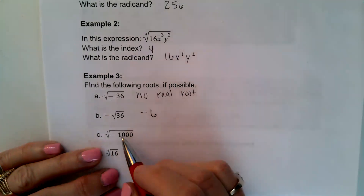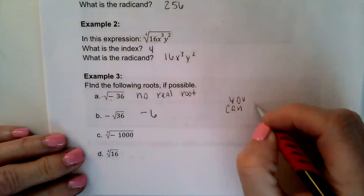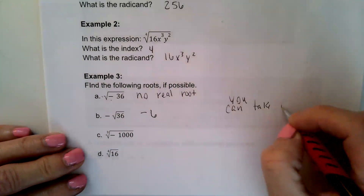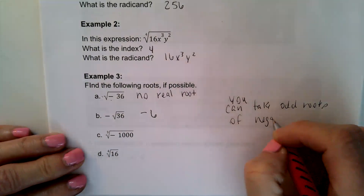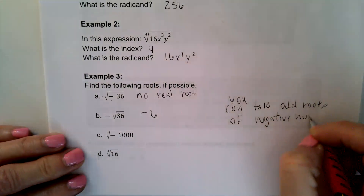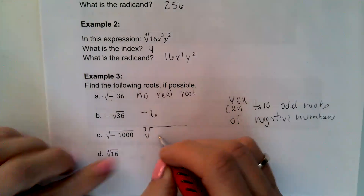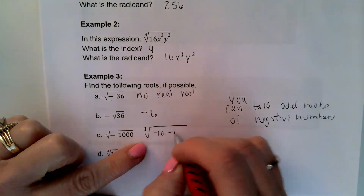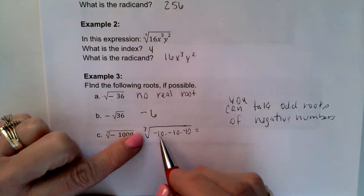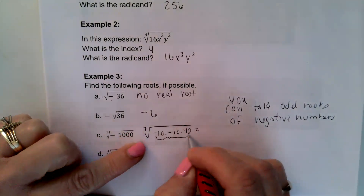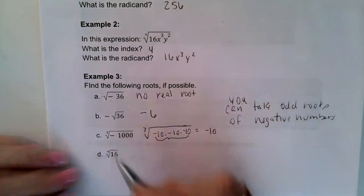You can take odd roots of negative numbers. That's because this is really saying negative 10 times negative 10 times negative 10 — three of them. When taking the cube root, I'm looking for a group of three, and I do have a group of three negative 10s. So negative 10 is the cube root of negative 1,000.